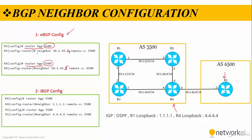Then, we define a neighbor statement between each other. On router 5, we use the command: neighbor 10.1.45.4 remote-as and the AS number that router 4 belongs to. And on router 4, we define a neighbor statement with the IP address of router 5 and remote-as of the AS that router 5 belongs to. These commands are enough to provide an eBGP peering between router 4 and router 5.